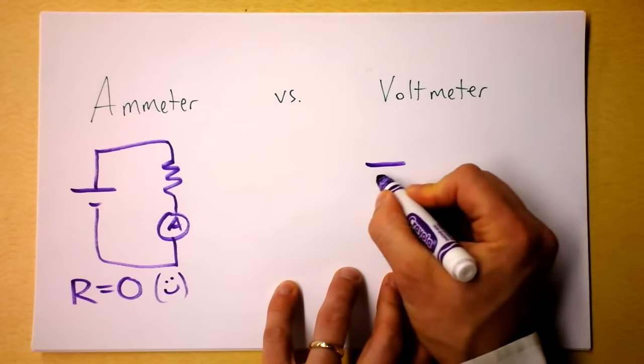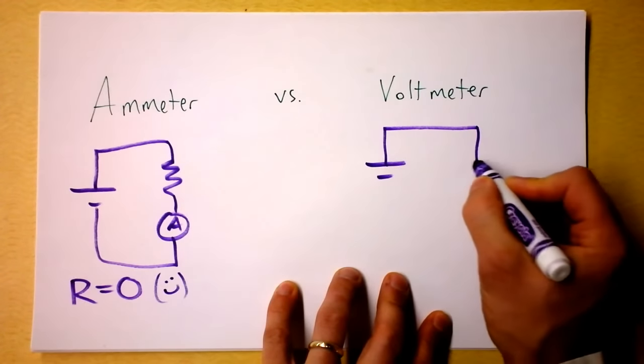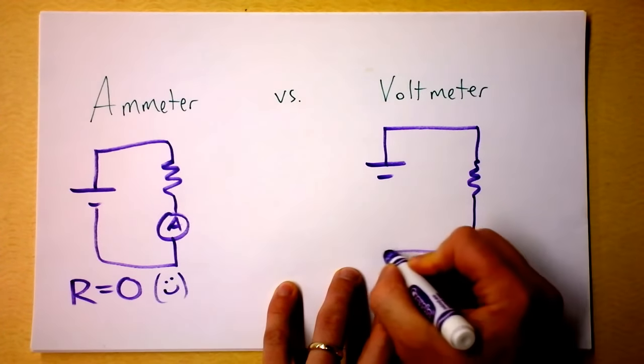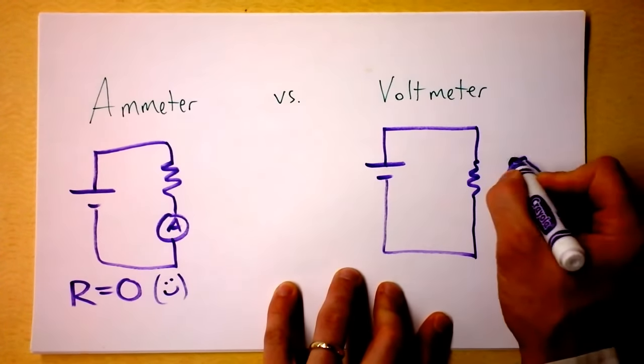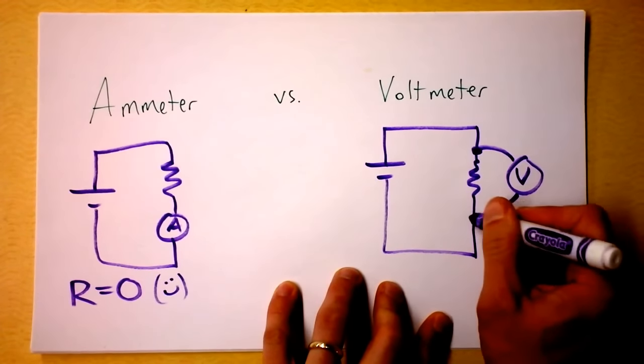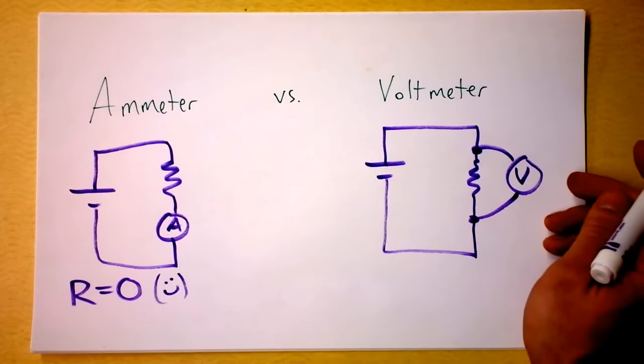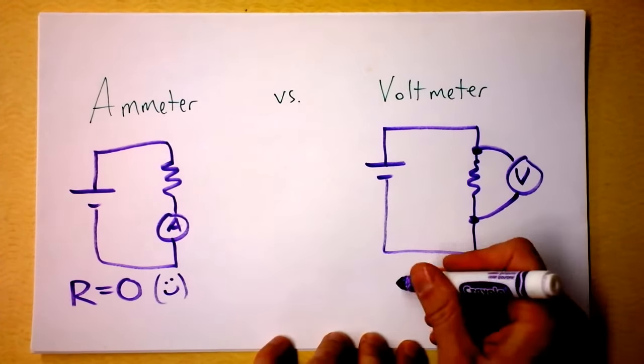If you want a voltmeter, you want to know the voltage across this resistor, so you get your voltmeter and you go like that. You touch it into the circuit, but it is not a part of the circuit. I like to think of a voltmeter as a casual observer.